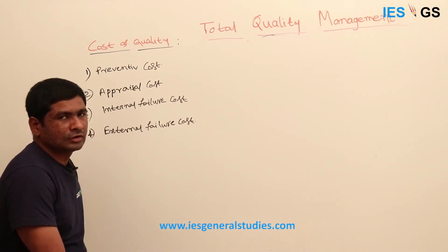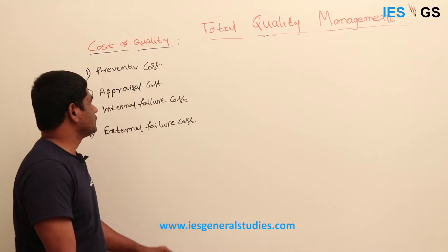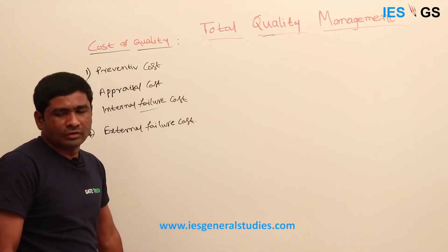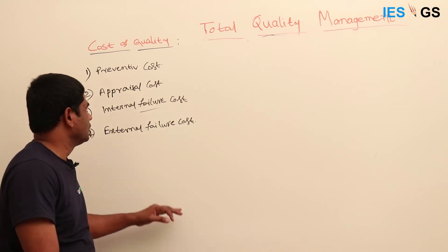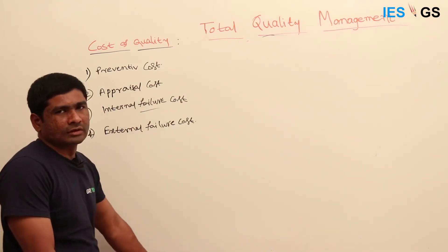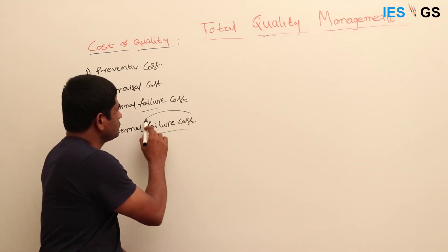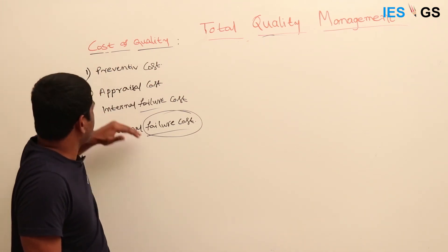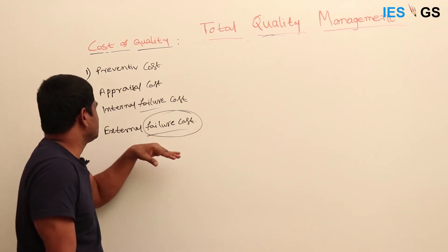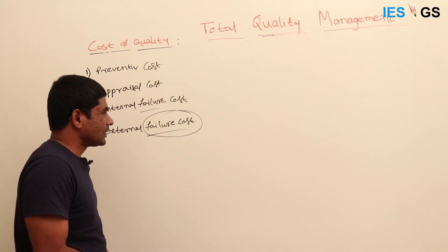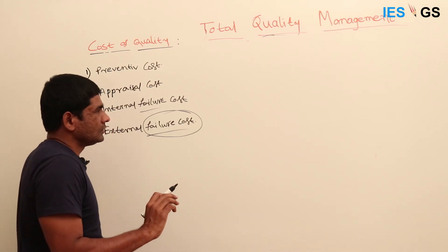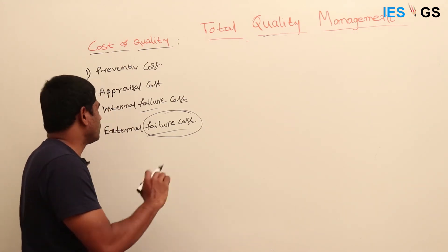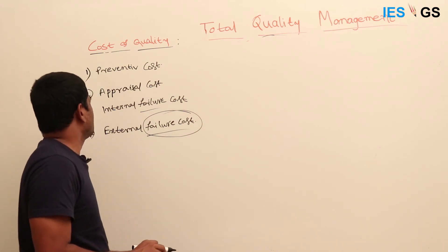External failure cost is when you are unable to find the failure in the product internally — instead, the customer finds the defect. This type of cost is very dangerous. At any cost, you must try to reduce external failure cost, because if the customer finds the defect in your product, it will bring very big damage. Sometimes it may even close your company altogether.